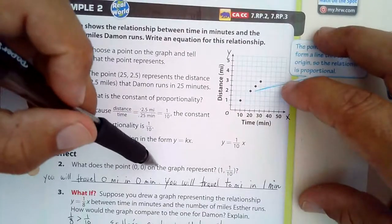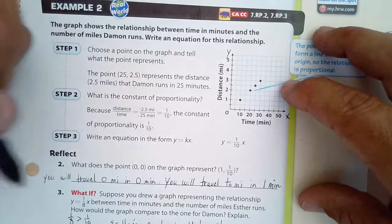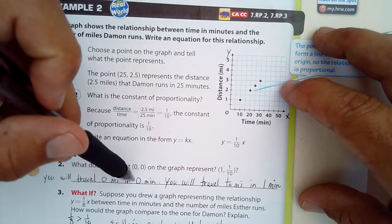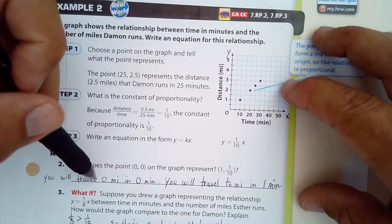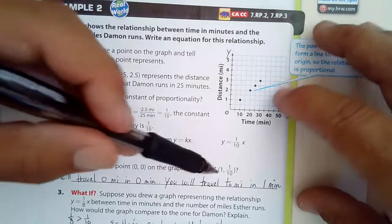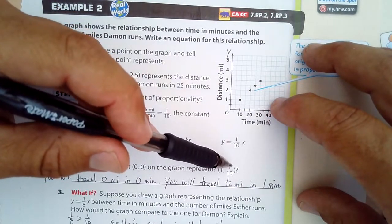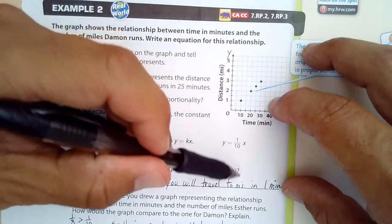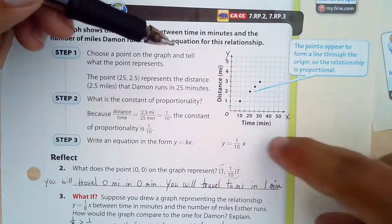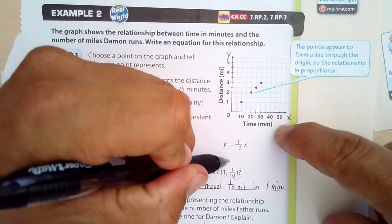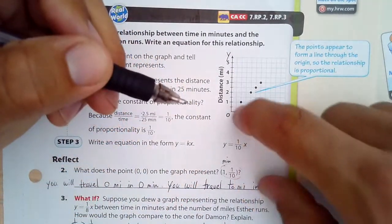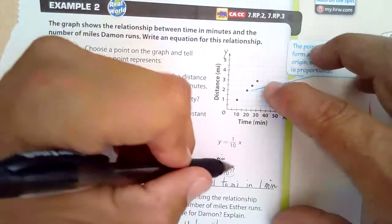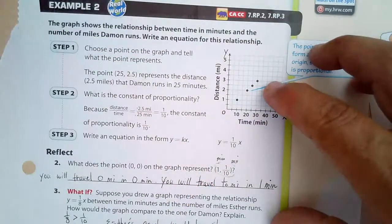What does the point 0, 0 on the graph represent? Well, if you travel 0 miles, you will travel 0 miles in 0 minutes. And 1 and 1 tenth, well, you're going to travel 1 tenth of a mile in 1 minute. That's what this ordered pair means right here, because the x value is the minutes and the y value, that second number, is the distance, the miles.